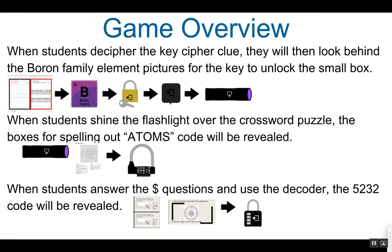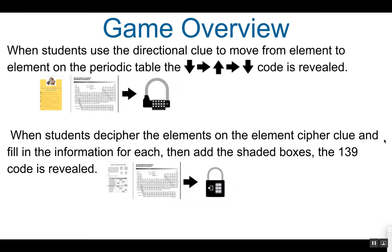When students answer the 4 questions and use the decoder, they will come up with the code 5232 for the 4-digit lock. When students use the periodic table and the directional clue to move through the periodic table from element to element, the directions of their movement through the table will give them the directional code: down, right, up, right, down, for the directional multi-lock.